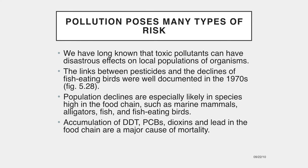Pollution is another human-based cause of biodiversity loss. We have long known that toxic pollutants can have disastrous effects on local populations of organisms. The links between pesticides and the declines of fish-eating birds were well documented in the 1970s. Population declines are especially likely in species high in the food chain, such as marine mammals, alligators, fish, and fish-eating birds. Mysterious, widespread deaths of thousands of Arctic seals are thought to be linked to an accumulation of persistent chlorinated hydrocarbons such as DDT, PCBs, and dioxins in the food chain. These chemicals accumulate in fat and cause weakened immune systems.